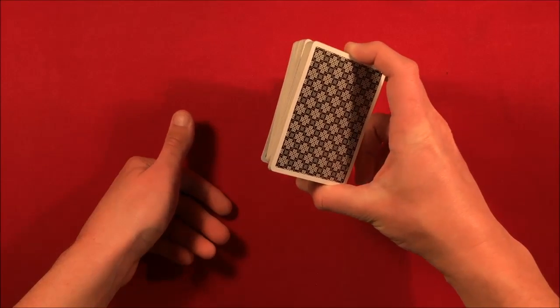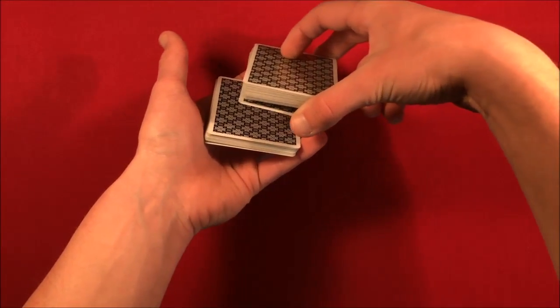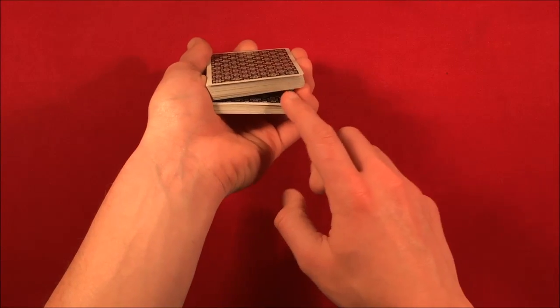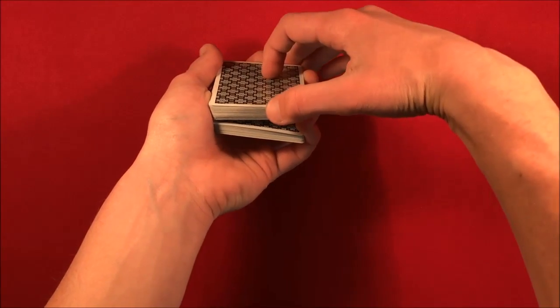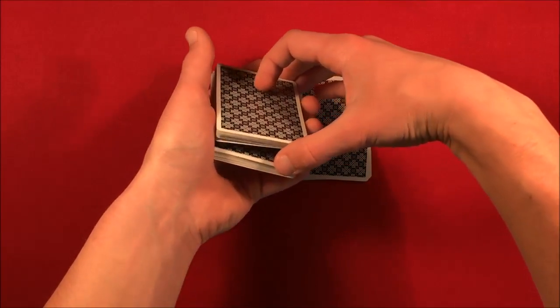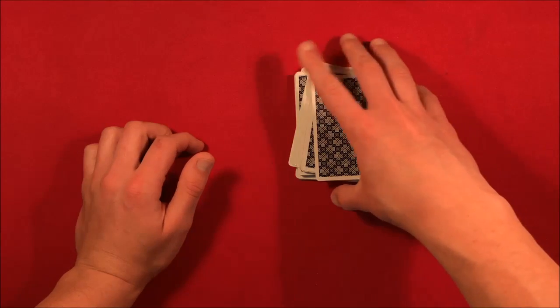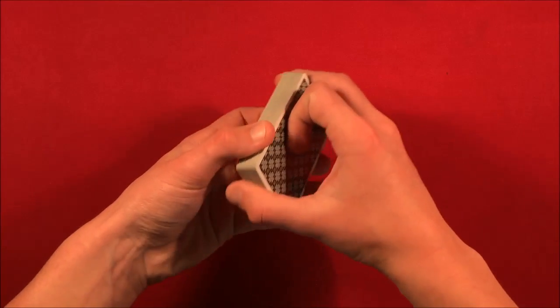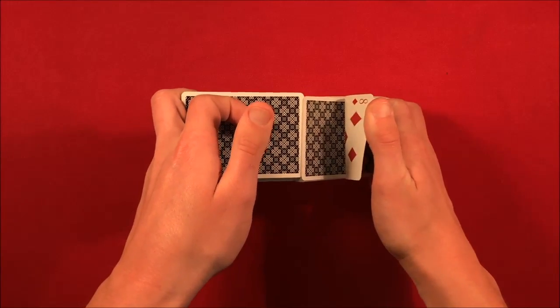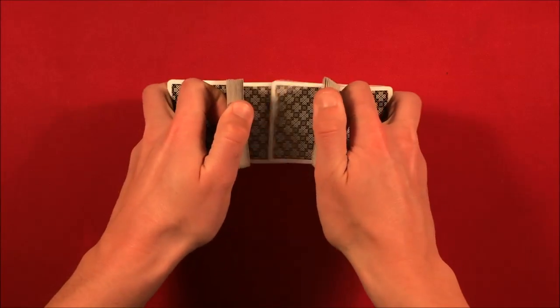Then you're going to pull over and get a swing cut here, keeping that thumb break, moving the thumb break on top of the pinky break. So now you've transferred their card to the pinky break, and you pull off several packets from the top, moving their card now to the top. From here you can pick this up and you can do a riffle shuffle, just leaving their card on top. So it's very simple, their card is going to stay on top as long as you end up leading with the right hand on top.